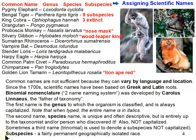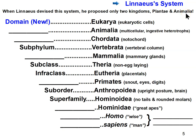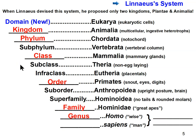Linnaeus came up with the classification system, though it's been greatly modified since. One major modification: when he devised the system he only had two kingdoms — Plantae and Animalia. His original hierarchy was: kingdom, phylum, class, order, family, genus, species. I would prefer you use 'Plantae' for the plant kingdom and 'Animalia' for the animal kingdom rather than just saying 'plant kingdom.'